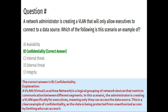Next question: a network administrator is creating a VLAN that only allows executives to connect to a data source. Which of the following is this scenario an example of? Option A: availability, Option B: confidentiality, Option C: internal threat, Option D: external threat, Option E: integrity. The correct answer is option B: confidentiality. A VLAN is a logical grouping of network devices that restricts communication between segments. Creating a VLAN specifically for executives so only they can access the data source is a clear example of confidentiality, protecting data from unauthorized access.